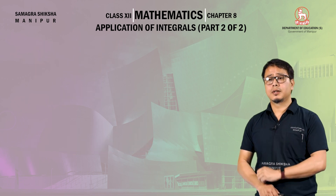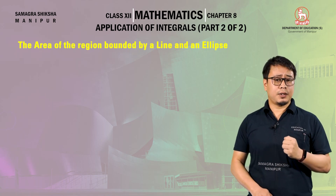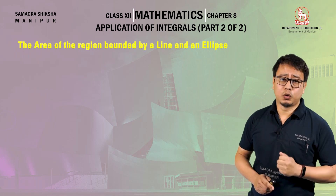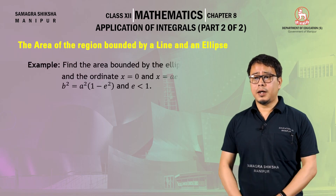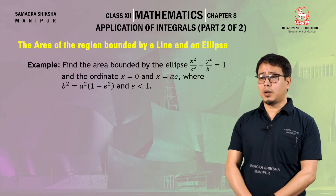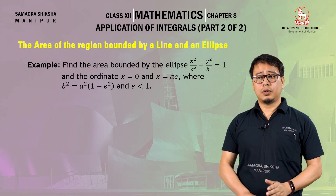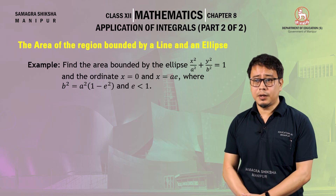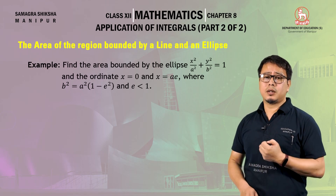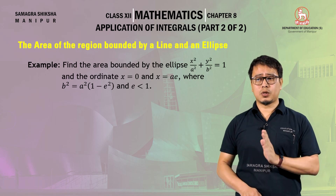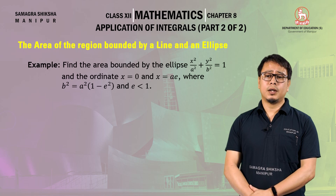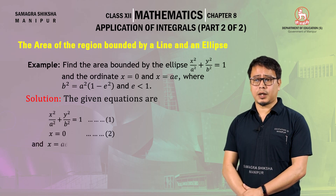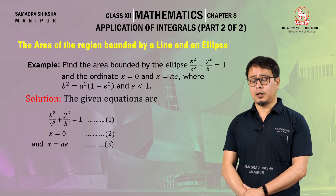Next, the area of the region bounded by a line and an ellipse. Example: find the area bounded by the ellipse x square over a square plus y square over b square equal to 1, and the ordinates x equal to 0 and x equal to ae, where b square equal to a square times (1 minus e square) and e is the eccentricity of the ellipse.